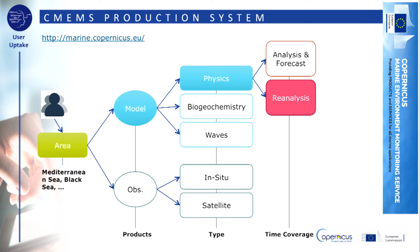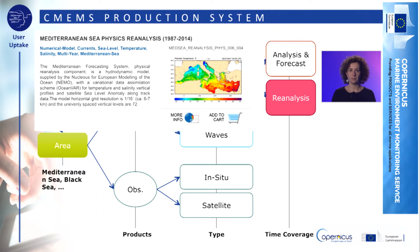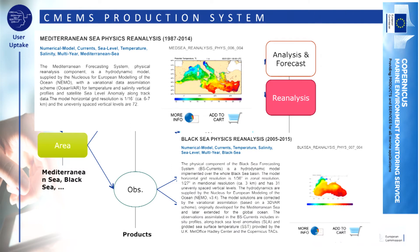Users may access geographic data through the CMEMS marine catalogue by selecting the preferred area. Products can be either model or observations data. In the model data group, the user may select analysis and forecast or reanalysis depending on the requested time coverage and ocean state characteristics, for physics, biogeochemistry, and waves. Considering the Mediterranean and Black Sea, two reanalysis products for physics are available: in the Mediterranean, a dataset covering the 1982–2014 period, and for the Black Sea, a dataset covering the period 2005–2015.